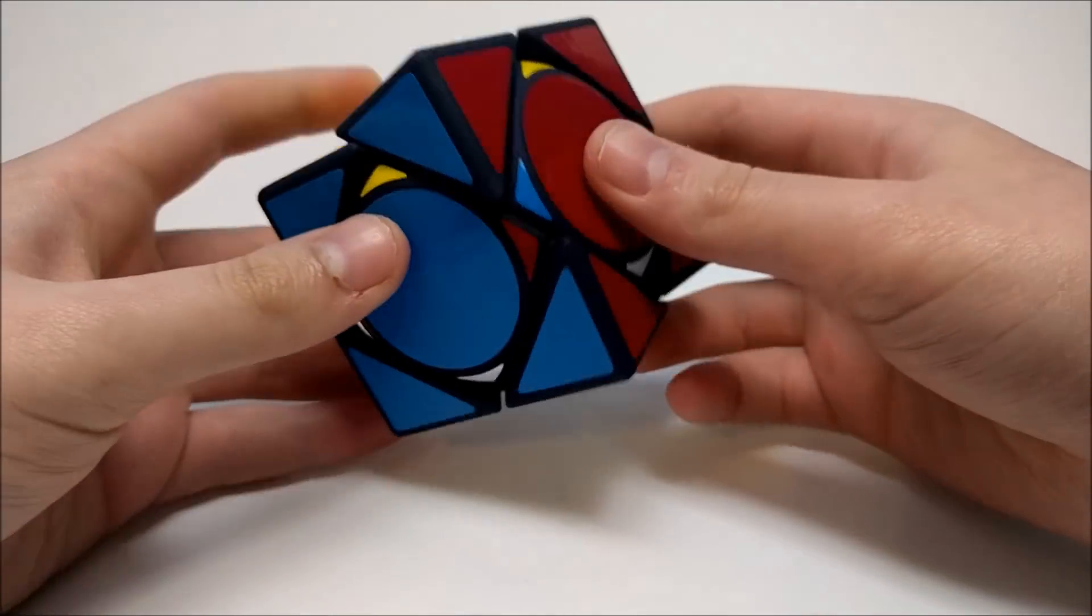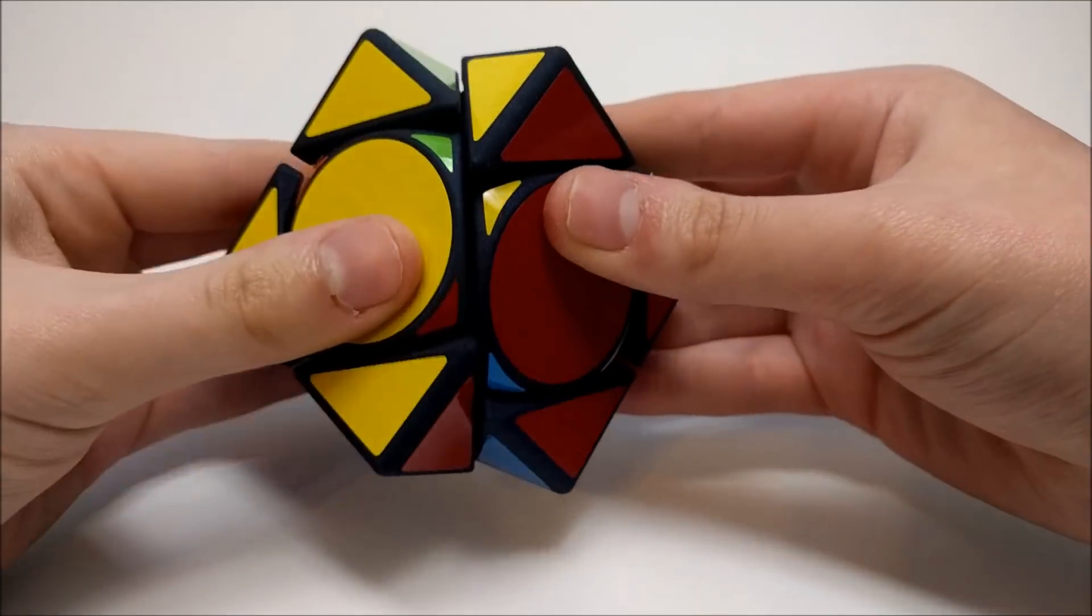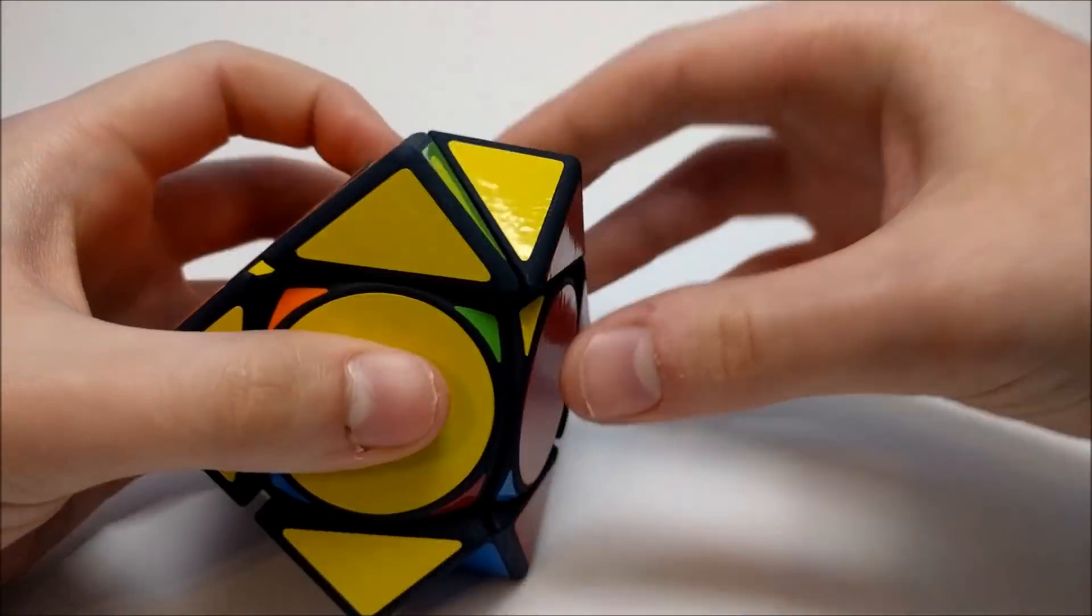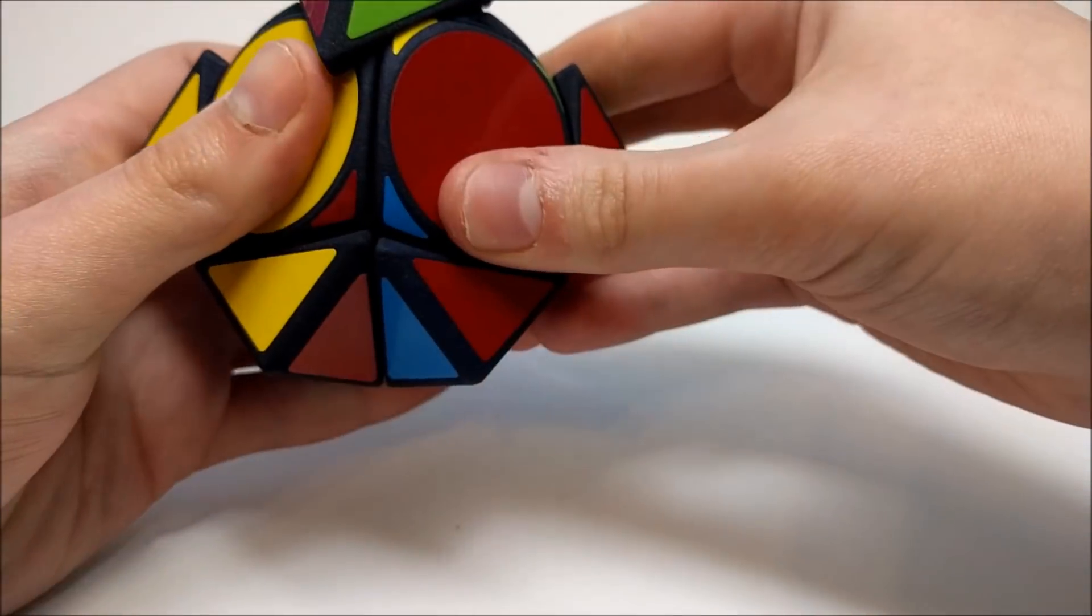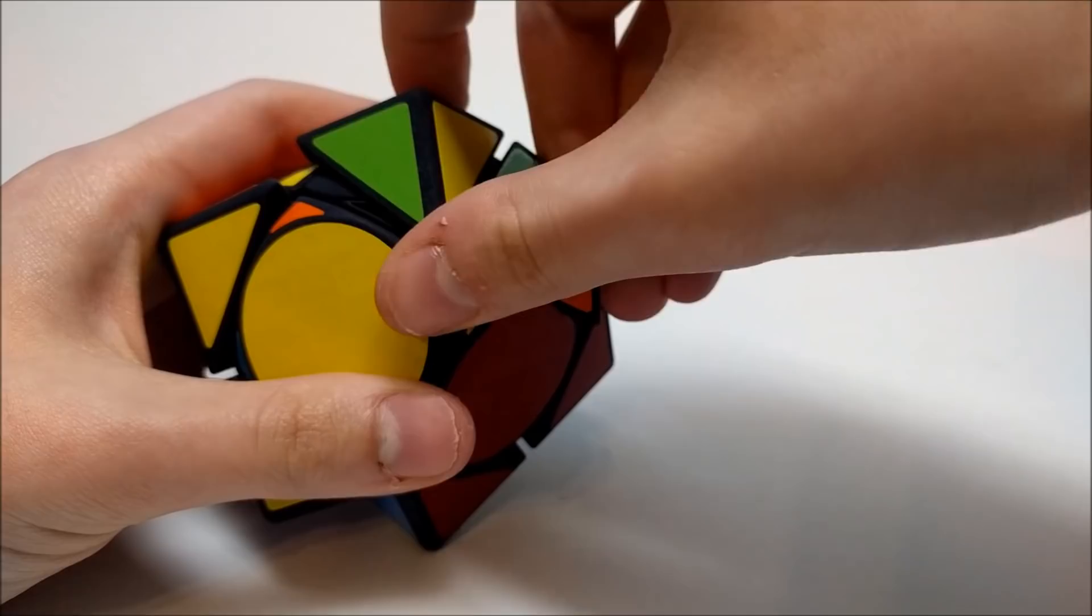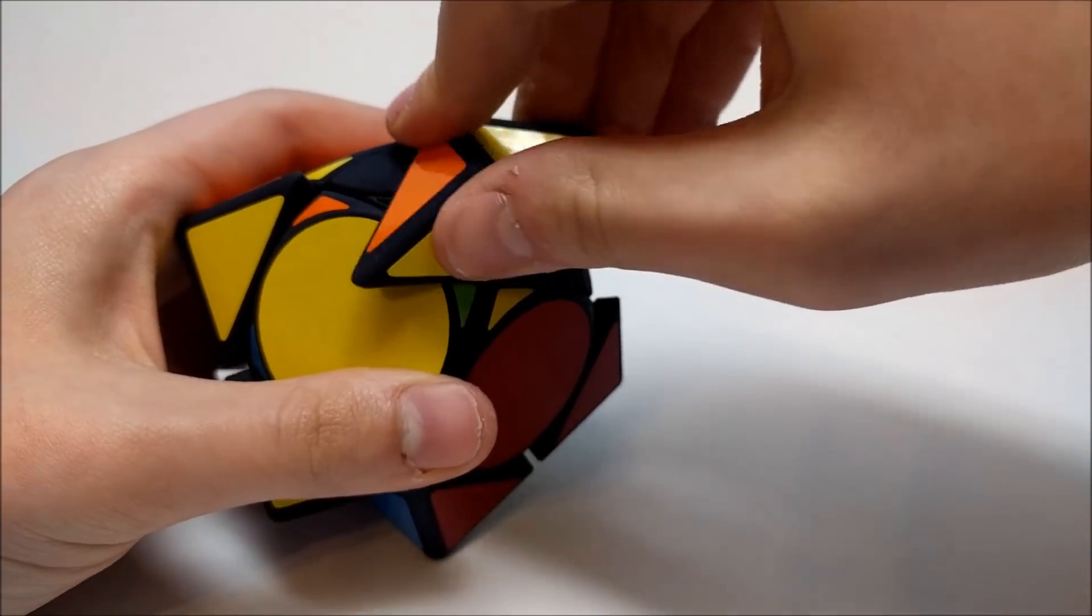So it turns like a normal Skewb, but if you do make half of a turn and line up the corners so they're next to each other, this one's a little stiff, they can change places. These corners can change places.